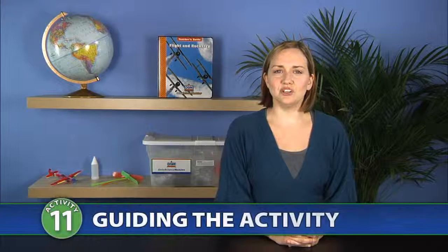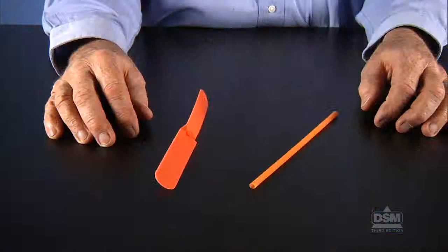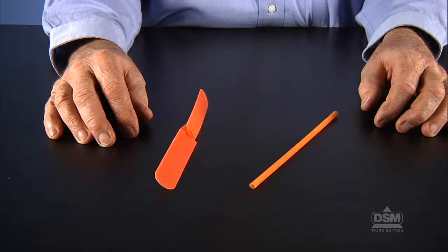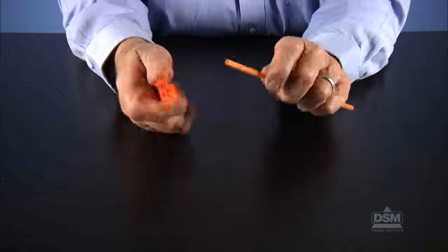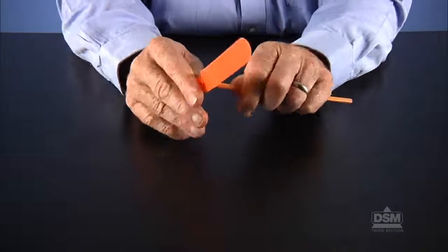To begin session two, distribute a copy of Activity Sheet 11, Part B to each student, and have students bring their activity sheets and a pencil with them to the launching site. You will also need to bring the whirligigs with you. Divide the class into teams of two and give a whirligig to each team. Instruct students to assemble their whirligigs by attaching the rotor to one end of the stick.